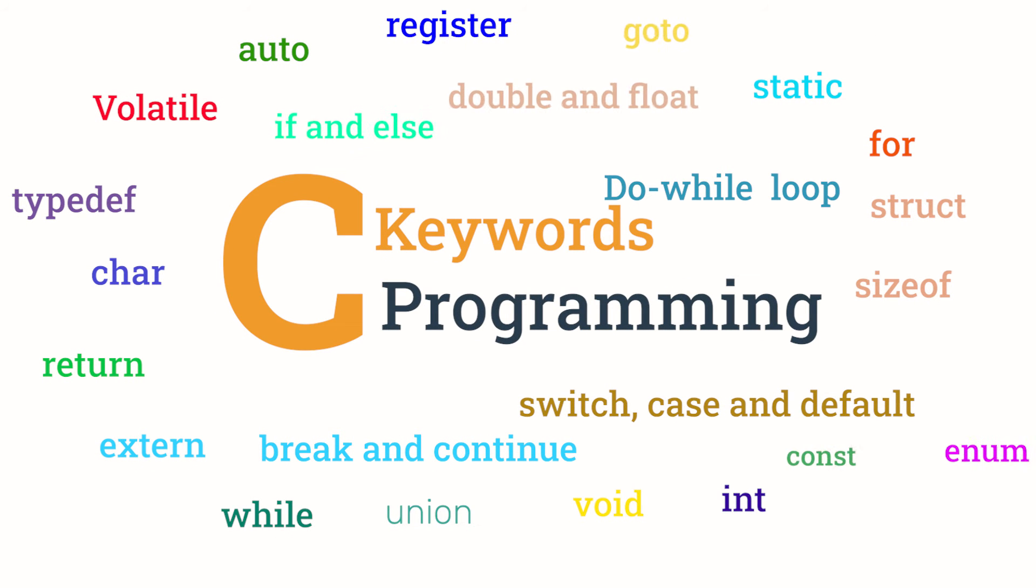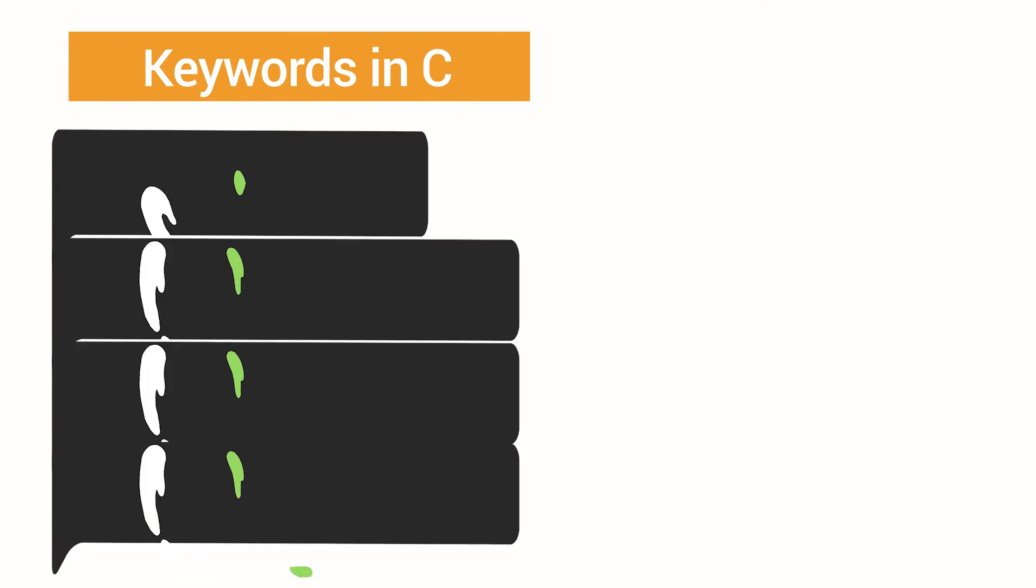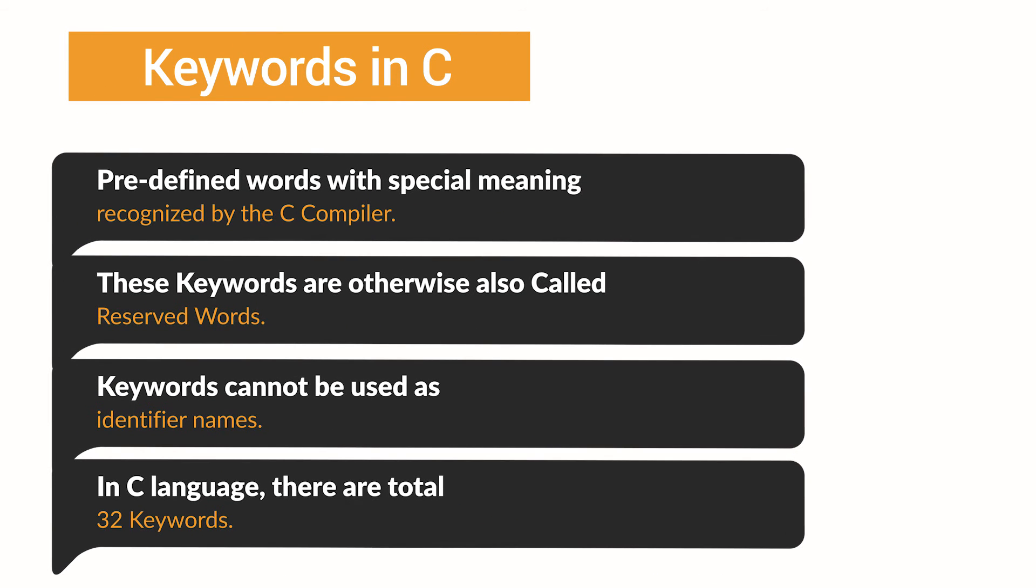Keywords in C programming. Keywords are predefined words with special meaning that are recognized by the C compiler. These keywords are otherwise called reserved words.